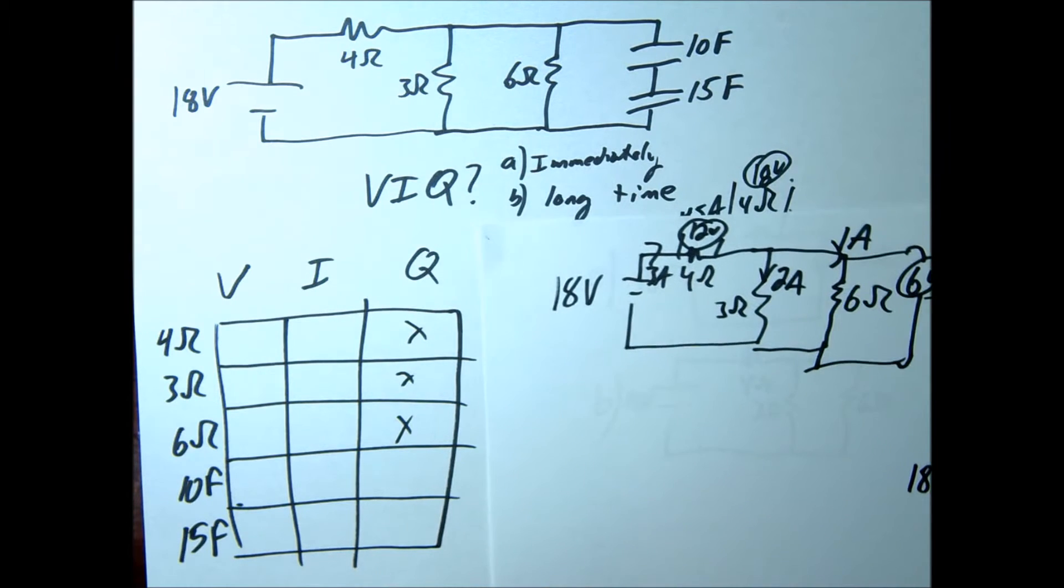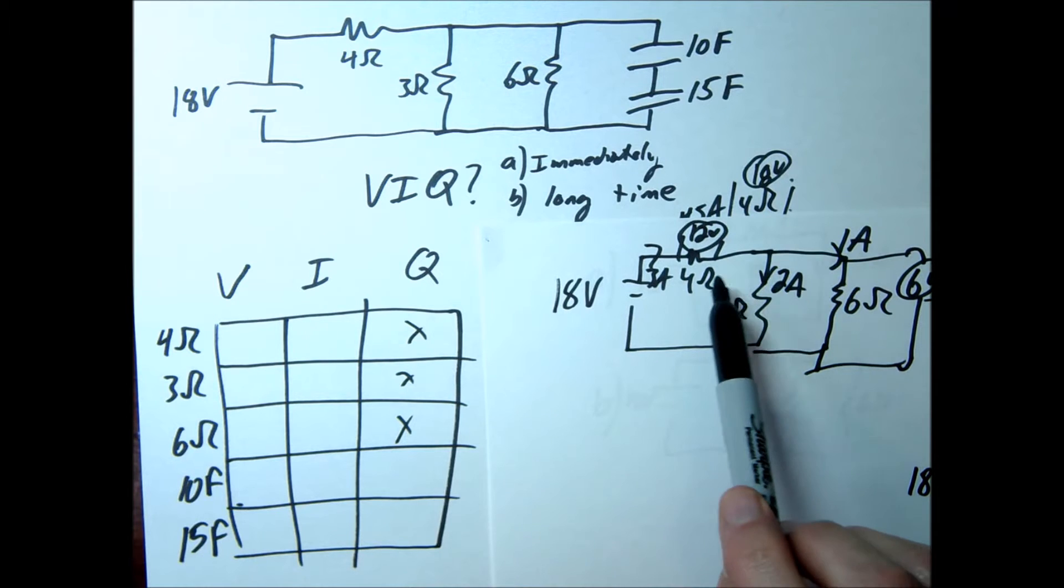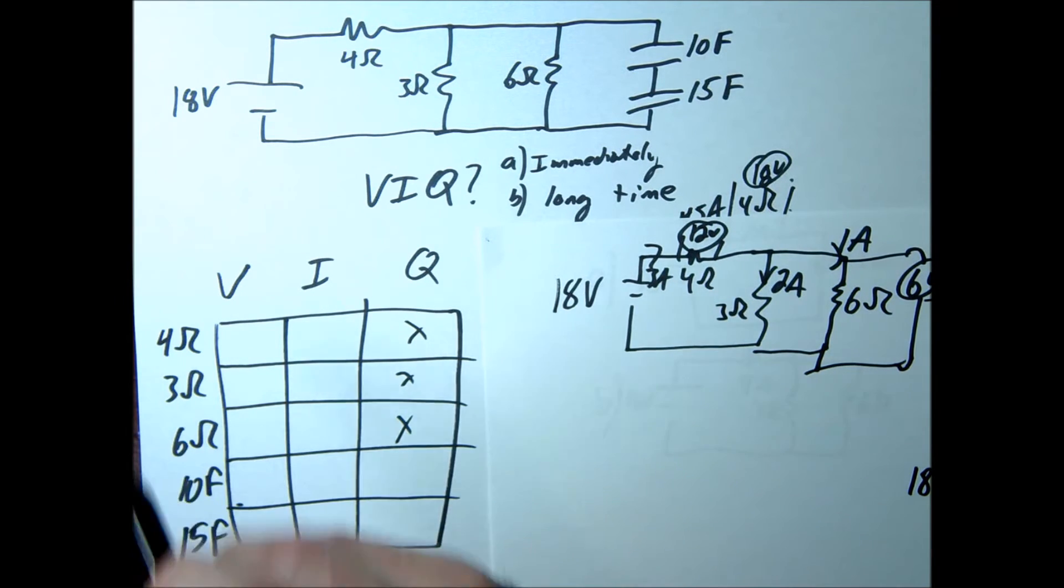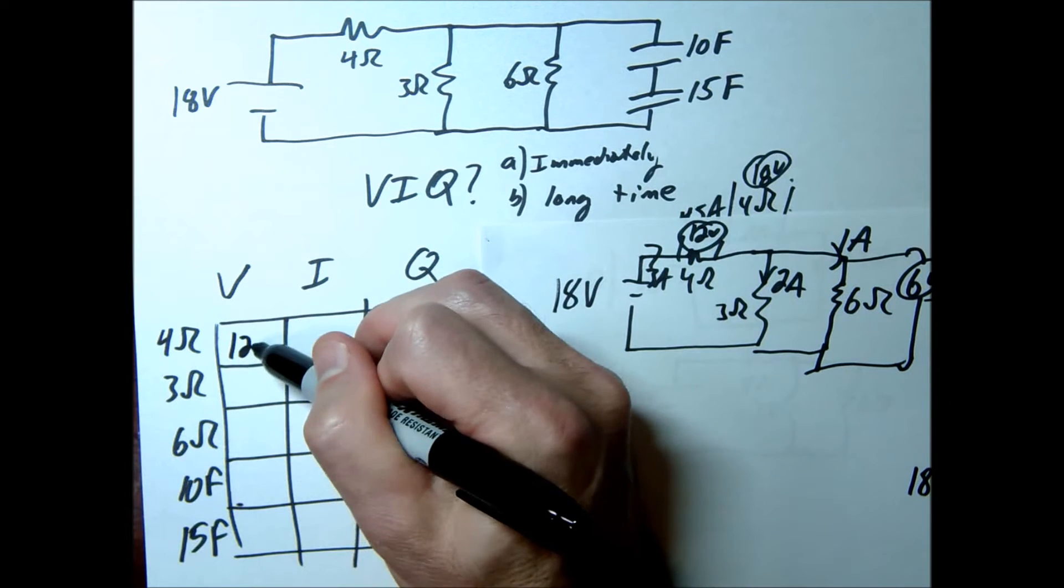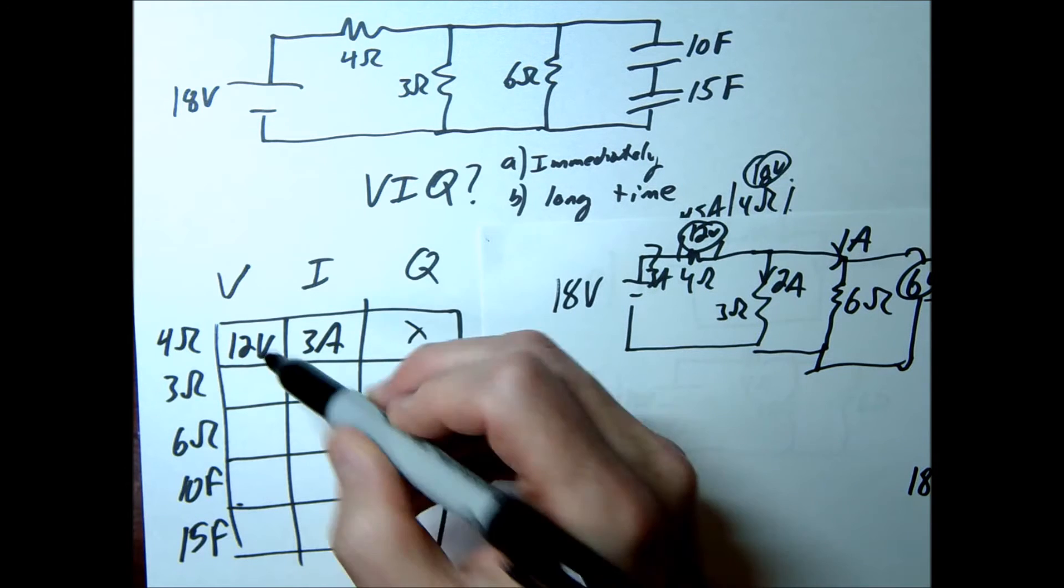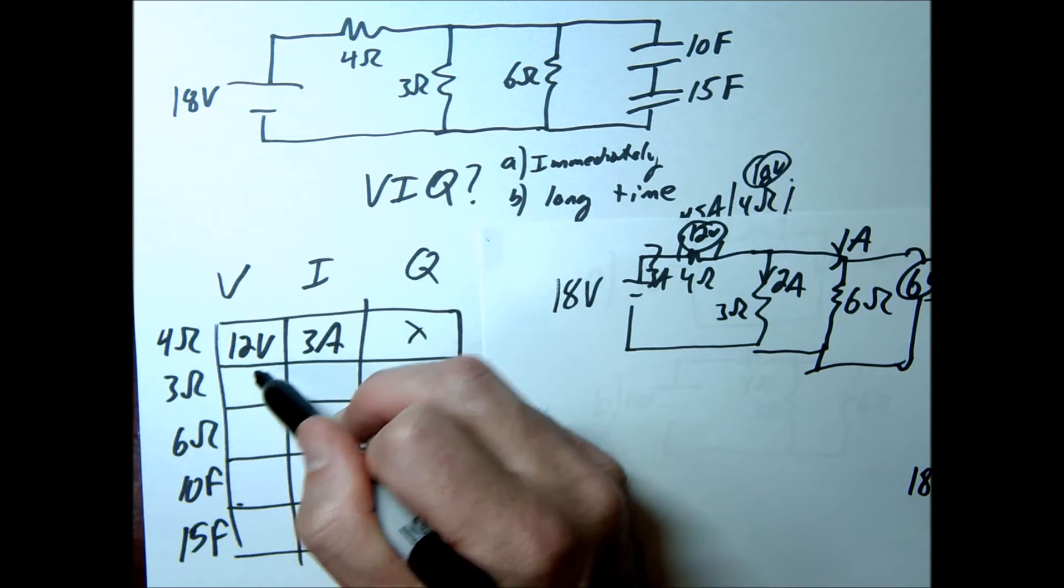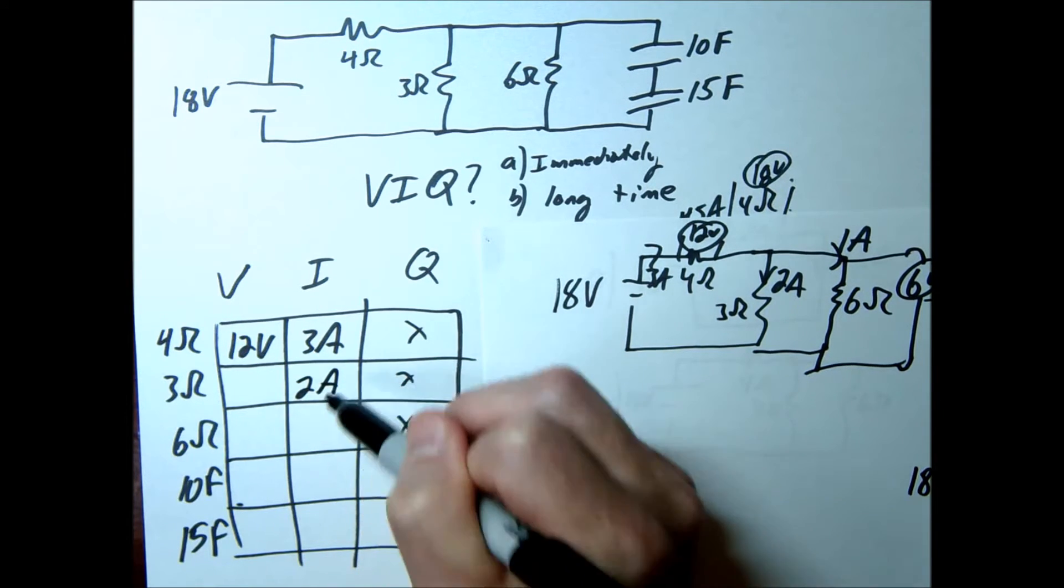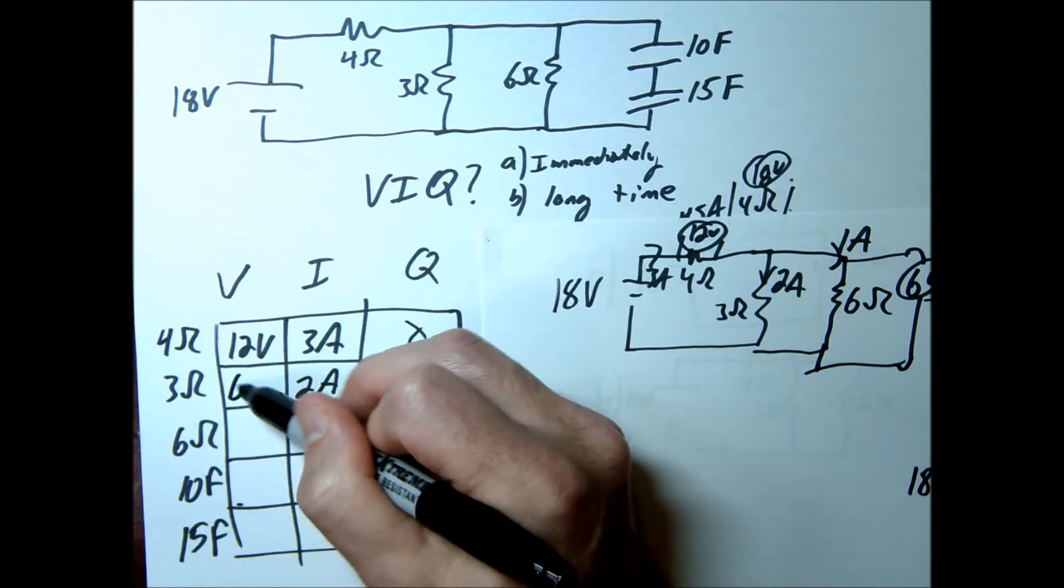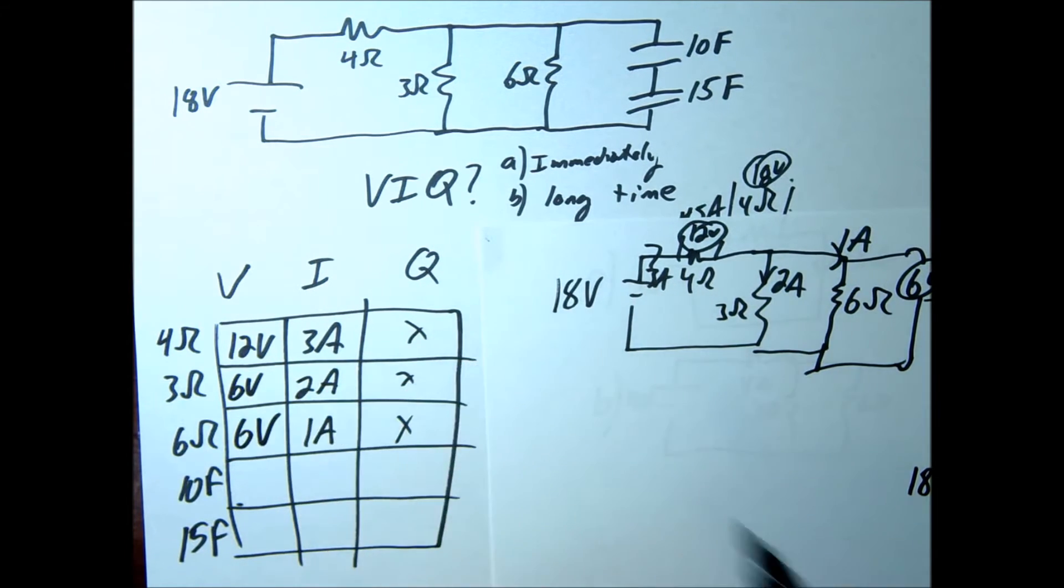Let's go ahead and fill this in. So across the 4 ohm resistor we had 12 volts and 3 amps. Across the 3 ohm resistor we had 2 amps. This was 1 amp. And then the voltage across these was 6 volts and 6 volts.